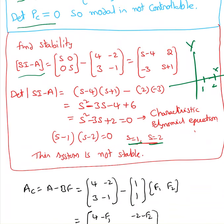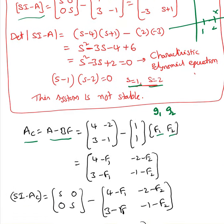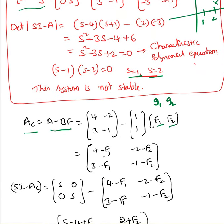Next point, I will find AC. AC equal to A minus BF. So, F equal to F1 and F2. Sometimes I used G1 and G2, so if you are going through my notes, you can use F or G, it doesn't matter. That's for the feedback. I am using different variables. So, AC equal to 4 minus F1, minus 2 minus F2, 3 minus F1, minus 1 minus F2.